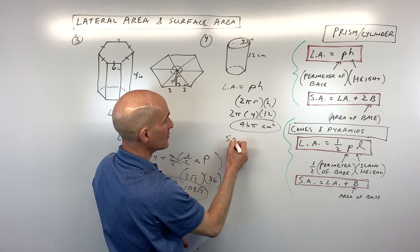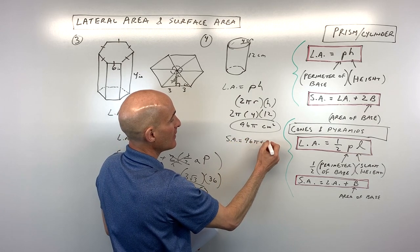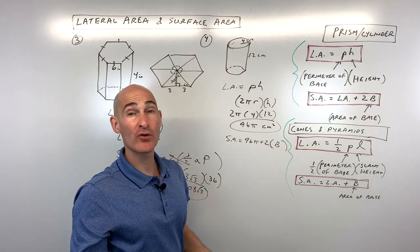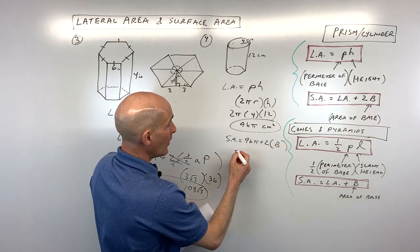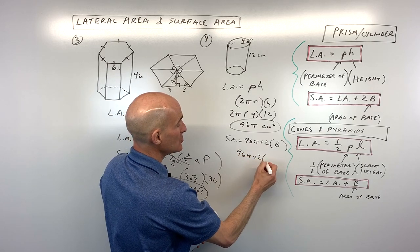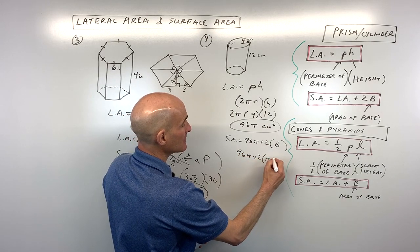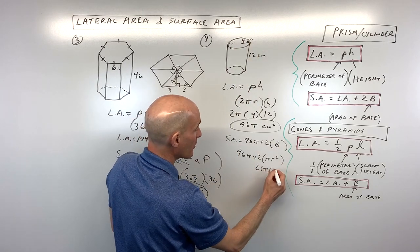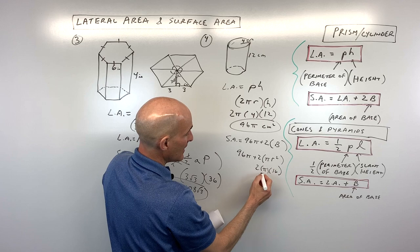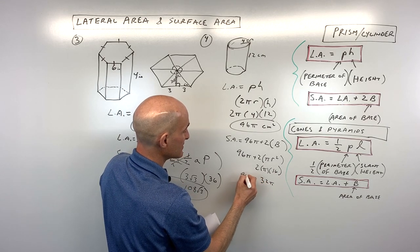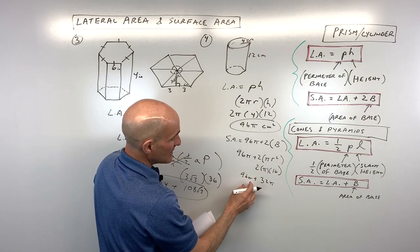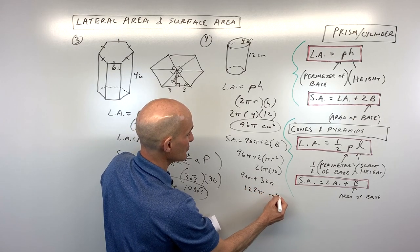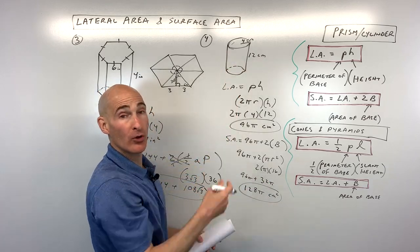The surface area equals 96π plus two times the area of the base. Since the base is a circle, its area is πr². That's two times π times four squared, which is 16 — giving us 32π. Adding 32π to 96π gives a total surface area of 128π centimeters squared.